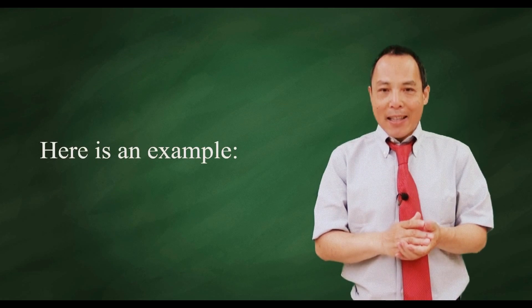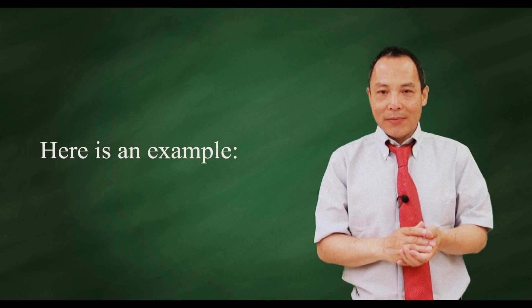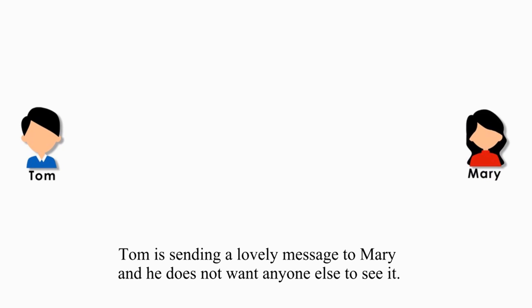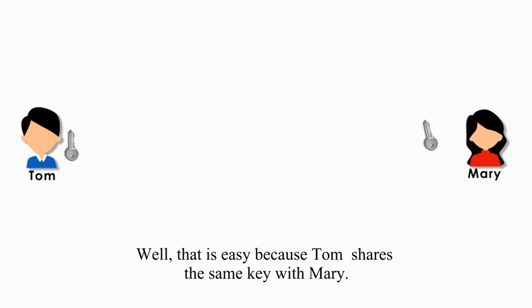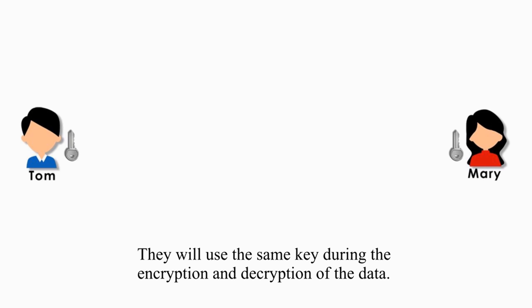Here is an example. Tom is sending a lovely message to Mary, and he doesn't want anyone else to see it. He wants both romance and privacy. He wants to encrypt his message. Well, that's easy, because Tom shared the same key with Mary. They will use the same key during the encryption and decryption of the data.